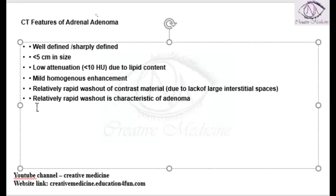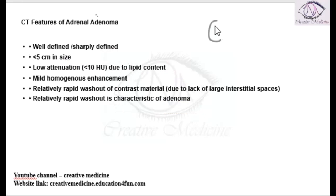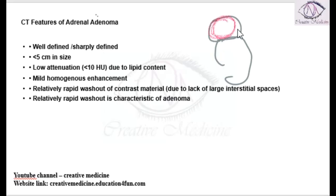On CT, adrenal adenoma is seen as a well-defined, sharp-margined lesion. If this is the adrenal gland and this is the kidney, it appears as a well-defined sharp object, less than five centimeters in size, with low attenuation of less than 10 Hounsfield units.